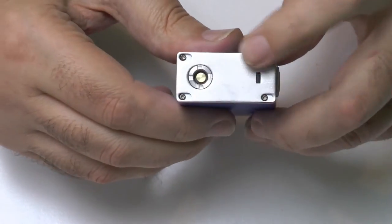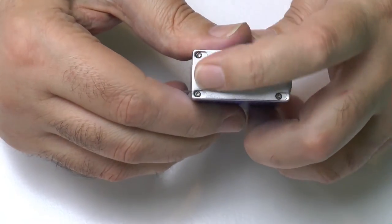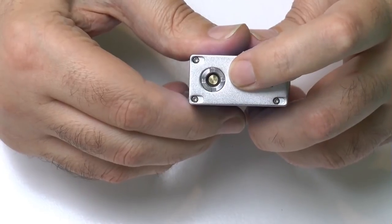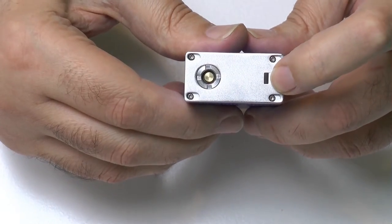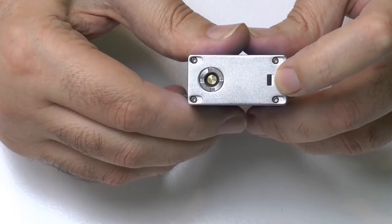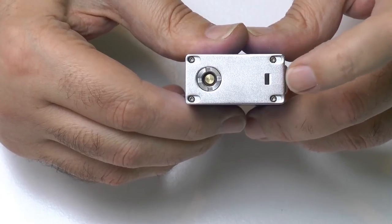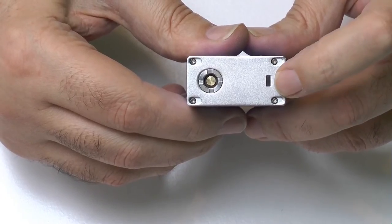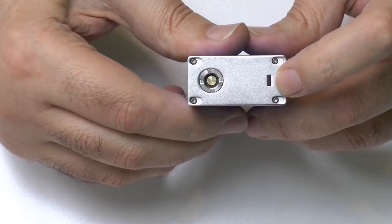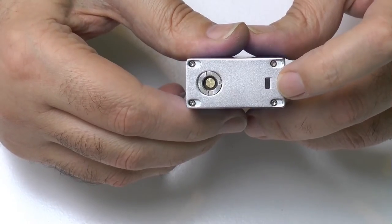On the top you have a 510 connection with four little air channels there. And here you have a tricolor LED light which will go green for full battery, amber for kind of halfway, and red when you really need to charge your battery.